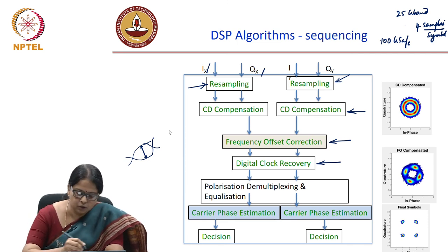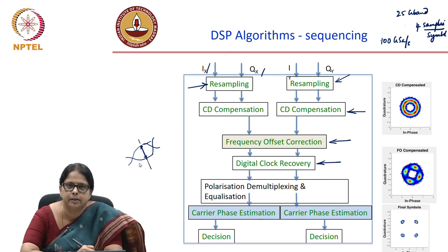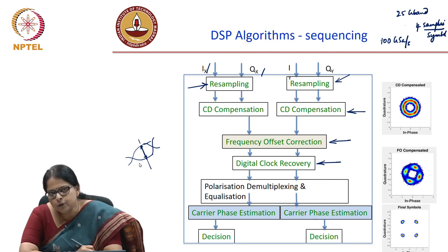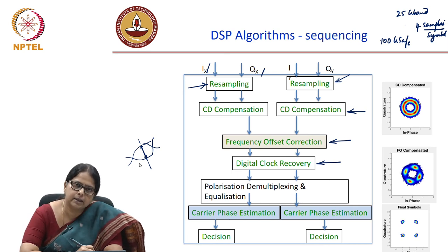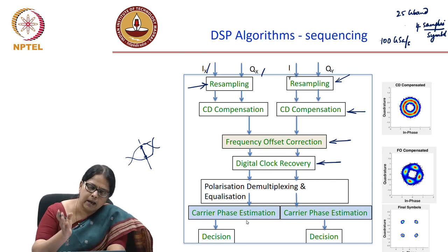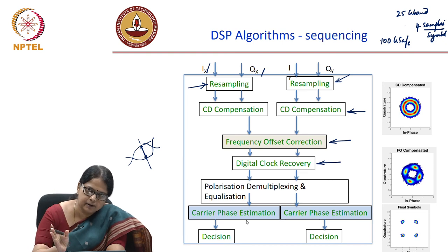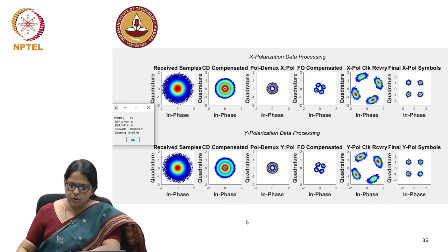The next process is digital clock recovery: out of the 10 samples per symbol, you need to pick one sampling point. You do the eye diagram with all available samples and pick those samples corresponding to maximum eye opening. Converting from 10 samples to the right sampling point is your digital clock recovery process. After getting to one sample per symbol, you perform polarization demultiplexing and equalization, then carrier phase estimation, phase noise correction, and finally the decision.